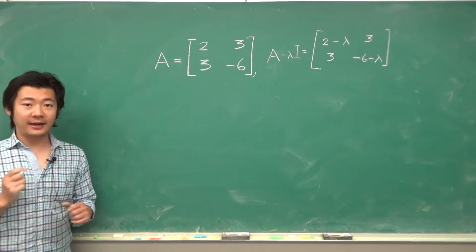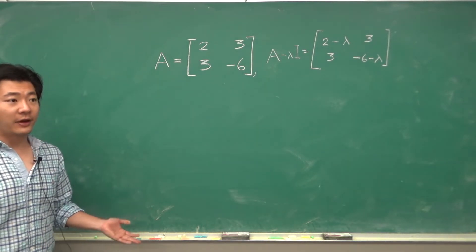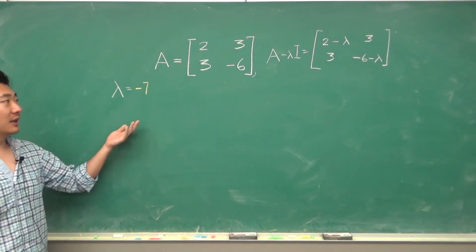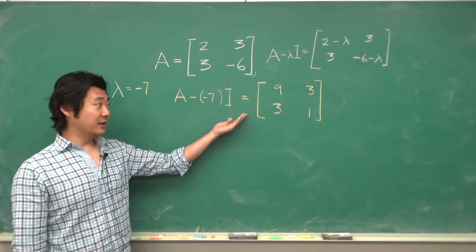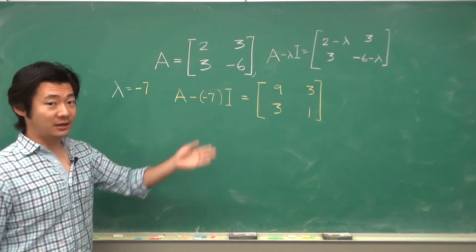Once you know the eigenvalues then you repeat the process as in a previous video to find the eigenvectors. But let's do it one more time. For the eigenvalue negative 7 we first plug into this equation. So we get this matrix.